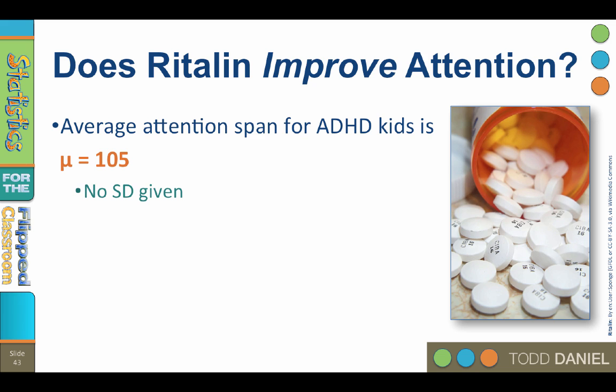For this example, we're going to test the research question: does Ritalin improve the attention span of ADHD kids? Now the average attention span of kids with ADHD is a mu of 105, but there's no information on sigma. Now you may ask, 105 what? And the answer is, I have no idea. I created this data set simply to illustrate a one-tailed test. I'm pretty sure that attention is not measured in units that could add up to 105. So just play along to learn the concept.